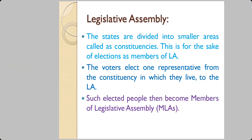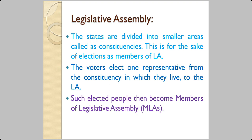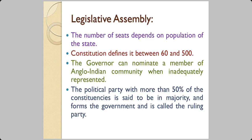The Legislative Assembly seats are divided into smaller areas known as constituencies, meant for the elections of members of the legislative assemblies. As soon as you become 18 years of age you can make a voter ID card and choose your own representative. Voters select one representative from the constituency in which they live to the Legislative Assembly. Such elected people become the MLAs — Members of the Legislative Assembly.